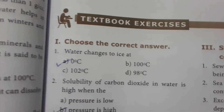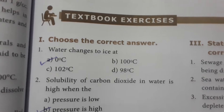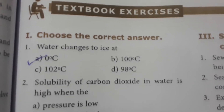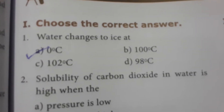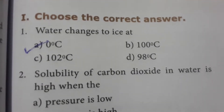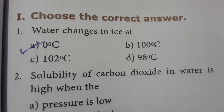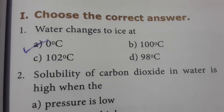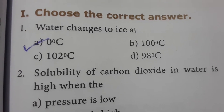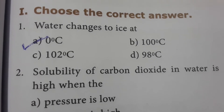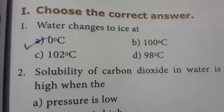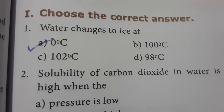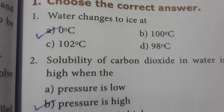Textbook exercises — Choose the correct answer. Water changes to ice at zero degrees centigrade. When water reaches zero degrees centigrade, solidification occurs, so water changes to ice at zero degrees centigrade.